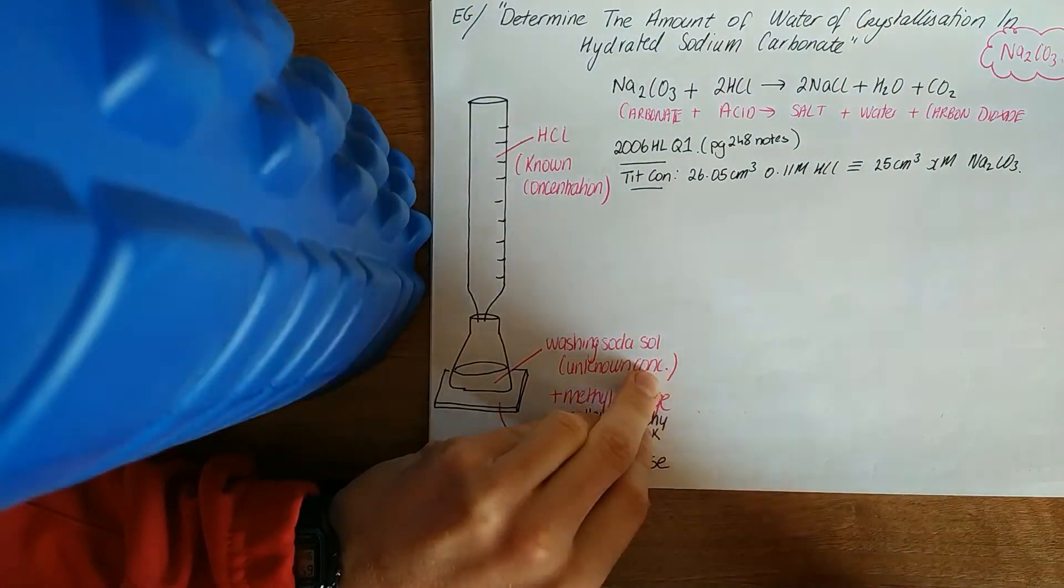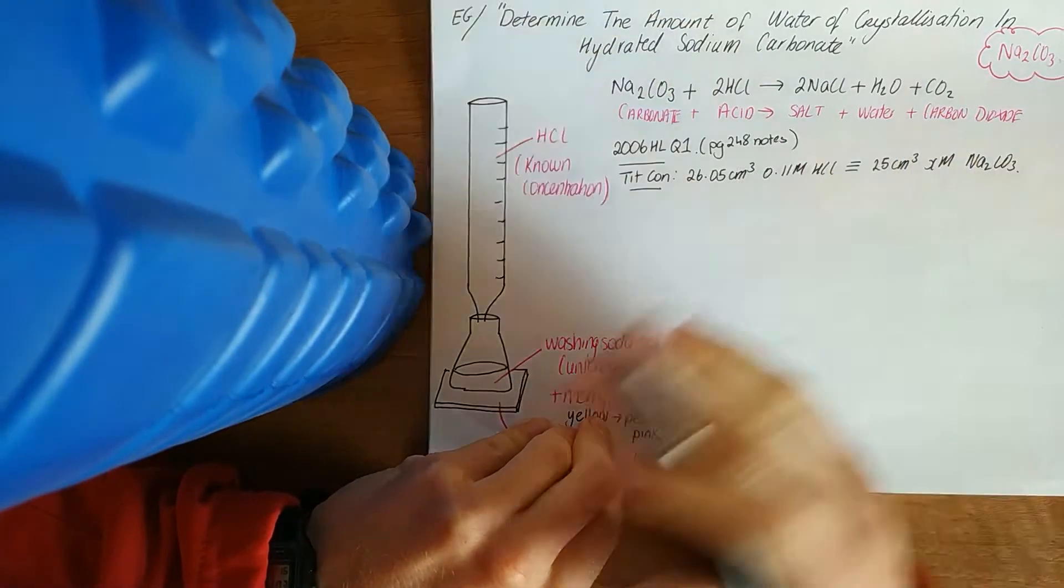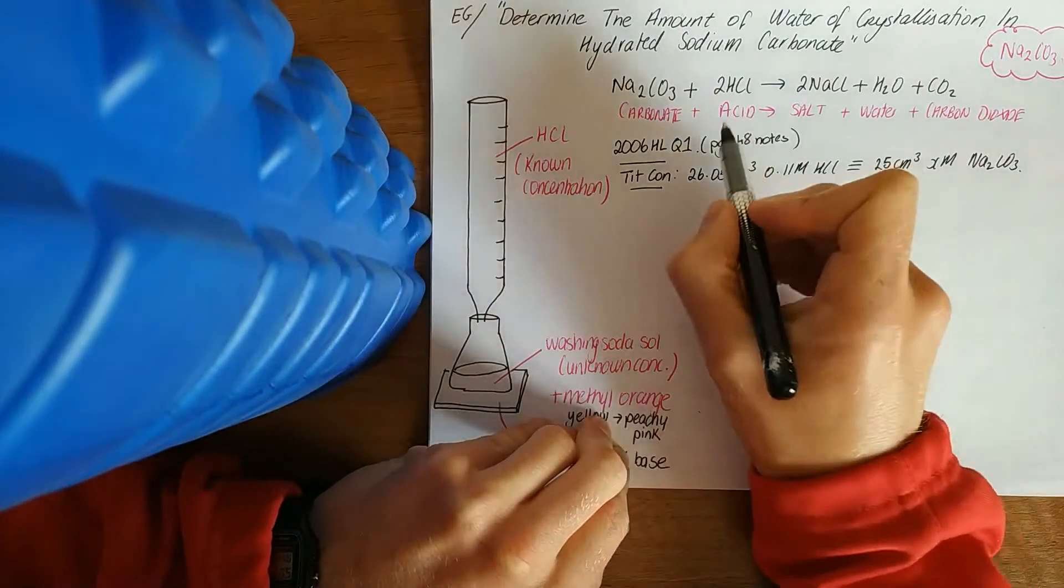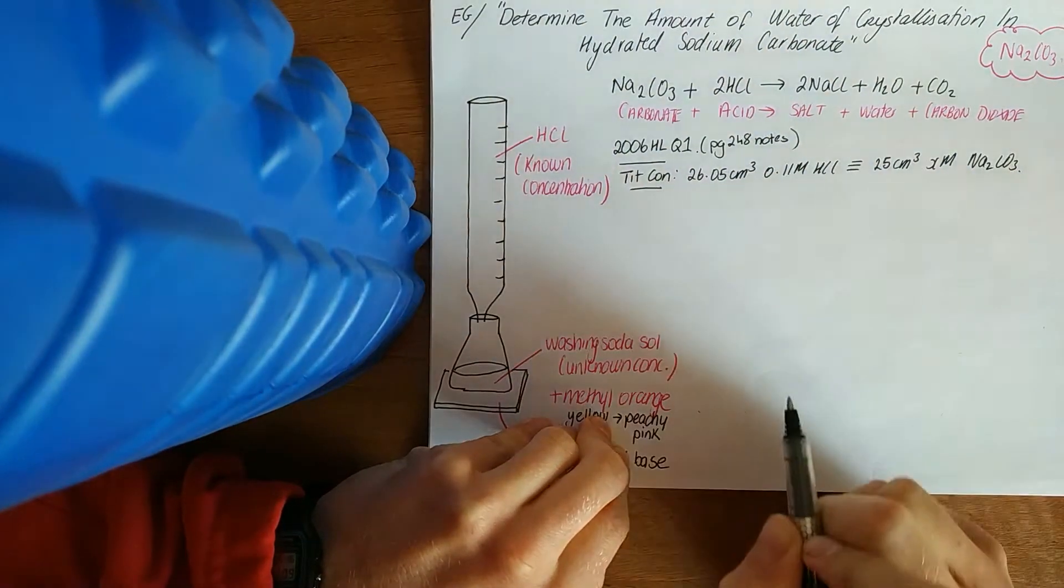This is just titration involving an acid and a carbonate. Like one of the four reactions of acids that we need to know, an acid and a carbonate gives you salt, water, and carbon dioxide.